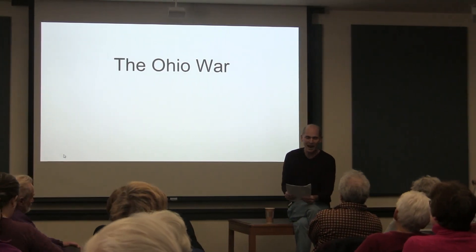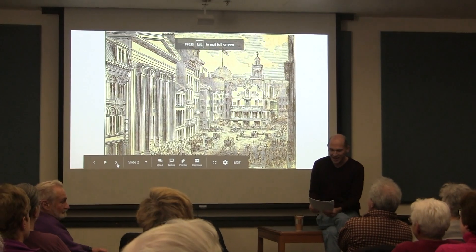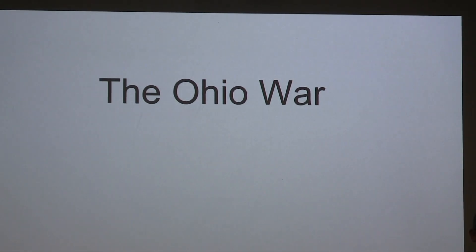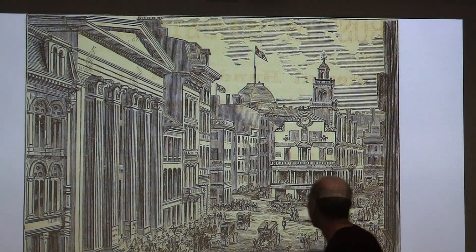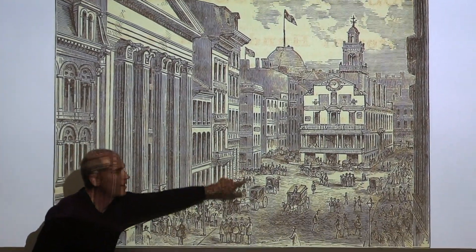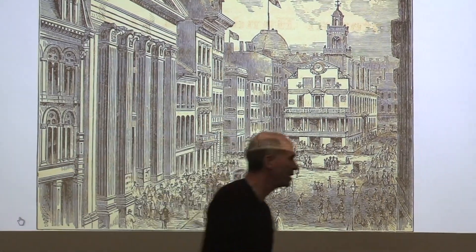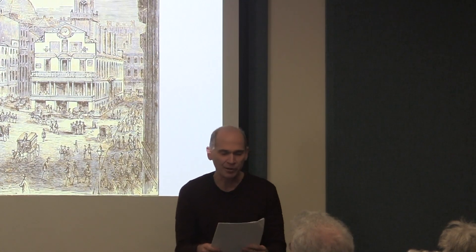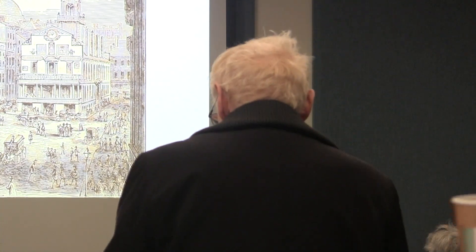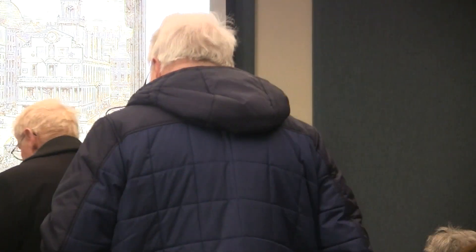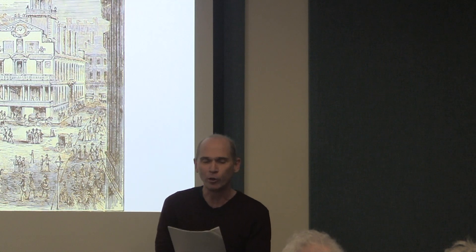Our story begins just a few miles from here at the Bunch of Grapes Tavern on March 1st, 1786, in the town of Boston on what is now State Street — they used to call it King Street. There, on that March afternoon in 1786, a group of New England investors met to form what they called the Ohio Company of Associates, or as it's usually called, the Ohio Company. They were led by a Revolutionary War veteran named Rufus Putnam.